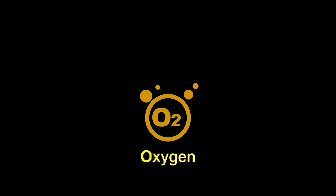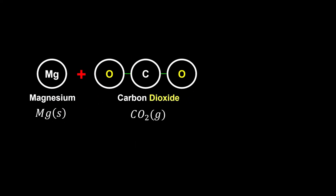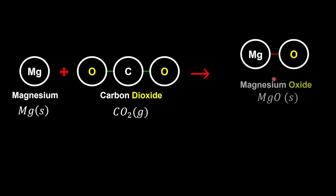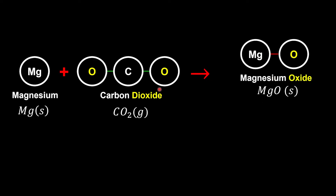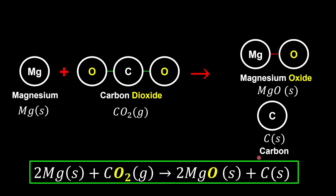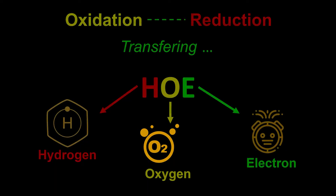Now let's see how to explain redox reaction in terms of transferring of oxygen. In this example, magnesium is mixed with carbon dioxide. After the reaction, magnesium forms a bond with oxygen to become magnesium oxide, while carbon dioxide loses the oxygen — because if somebody gains the oxygen, somebody else must be losing it. From the chemical equation, magnesium gains the oxygen and undergoes oxidation. Meanwhile, carbon dioxide loses the oxygen and undergoes reduction.